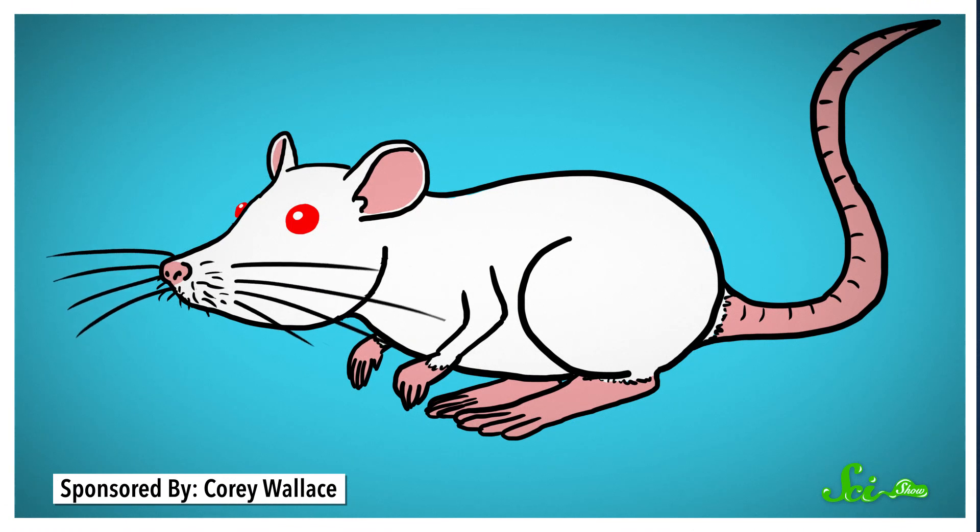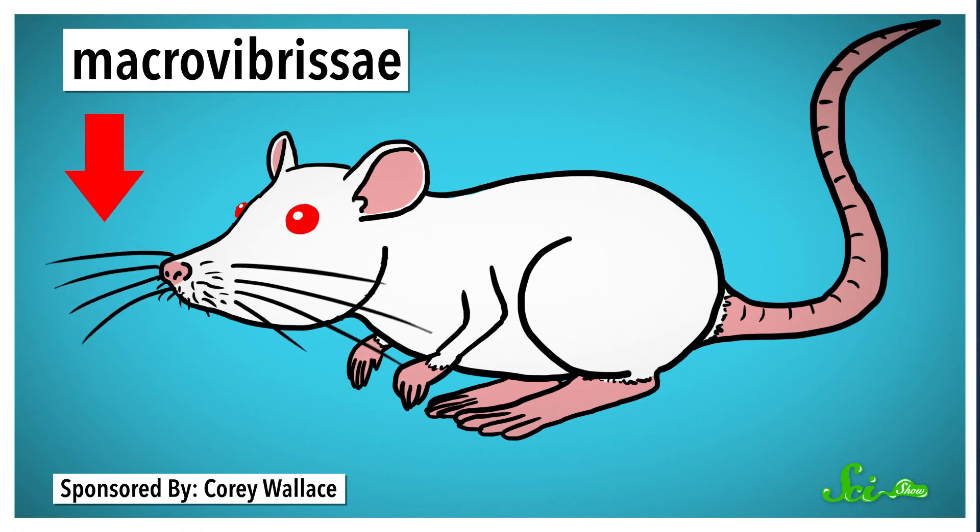Now, whiskers can be found anywhere on an animal's body, but the most common spot is on the face, especially around the mouth or eyes, where they come in two main types. The long hairs we usually think of as whiskers are called macrovibrissae, and they can be moved voluntarily.